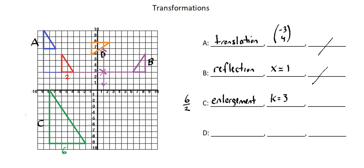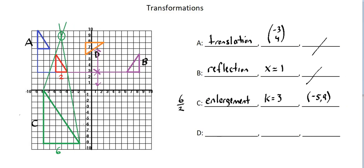Now we want to identify the center of enlargement. The center is the intersection point of all lines connecting corresponding points on the object and the image. I'll draw a line connecting the top vertices of both triangles, and then do the same with the bottom right vertices. I can now identify the center as negative five, nine. Connecting the remaining vertices will also pass through that center, but two connections are sufficient to identify it.